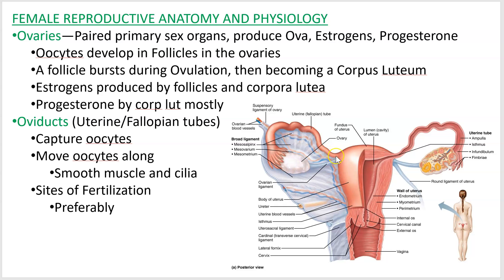The oviducts — also called fallopian tubes or uterine tubes — are these tubes that capture the oocyte when it gets released and wave it along. They have smooth muscle and cilia to push the oocyte along. Somewhere in this tube is where, if you want to get pregnant, you want the egg fertilized — up in here so that it can warn the uterus that it's coming through the production of a hormone.